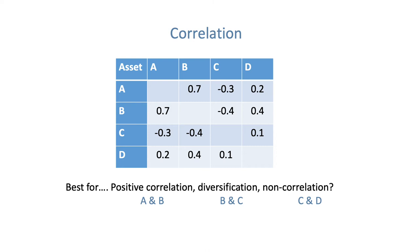Let's put that technique into practice. For positive correlation, looking at the table, the highest positive number is 0.7 — which appears twice as the table is synchronised. Moving horizontally and vertically from that number shows assets A and B. So 0.7 is the correlation between A and B, which is the highest on the table and represents the greatest positive correlation.